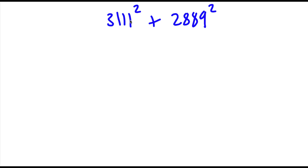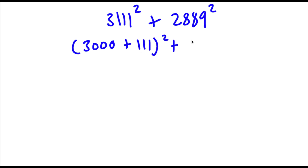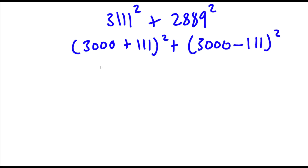Alright, so the bonus problem: I have 3,111 squared plus 2,889 squared. The first thing I'm going to do is rewrite this as (3,000 plus 111) squared plus (3,000 minus 111) squared.